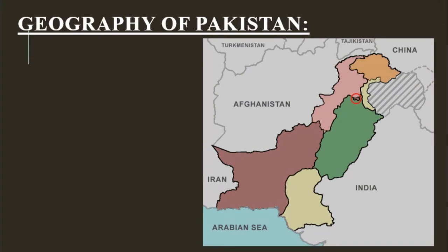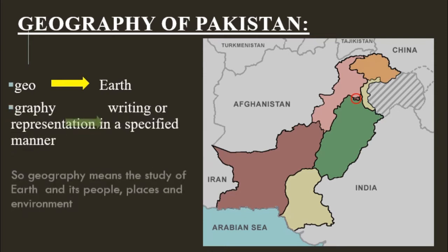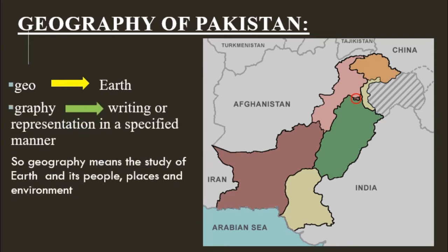As the name of this unit is Geography of Pakistan, let's find out what geography means. Geography is a combination of two words: 'geo' and 'graphie.' Geo means earth, and graphie means writing or representation in a specified manner. So geography means the study of earth and its people, places, and environment.